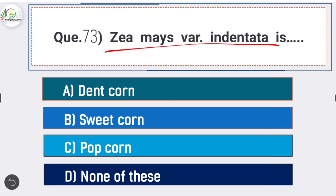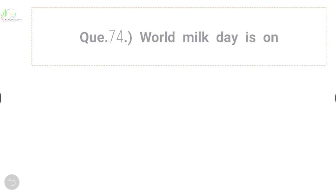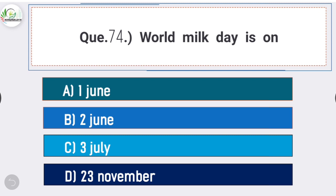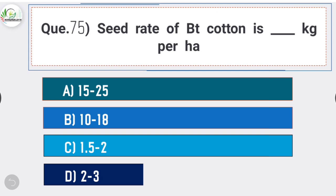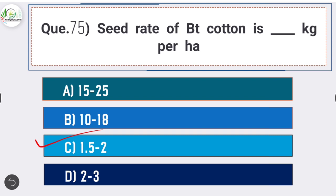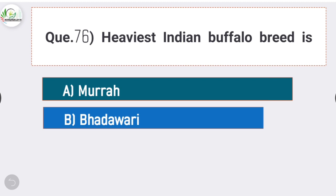Question number seventy-three: CMA's variety Indam data is - answer is option A - dent corn. Question number seventy-four: World Milk Day is on - answer is option A - 1st June. World Milk Day is on 1st June. Question number seventy-five: seed rate of Bt cotton is - answer is option C - 1.5 to 2 kilograms per hectare.